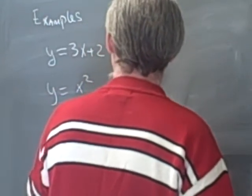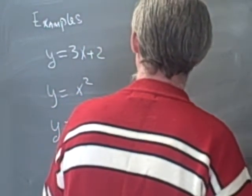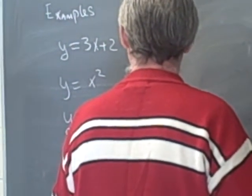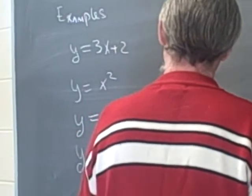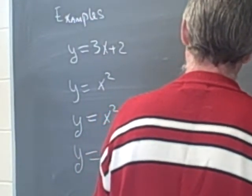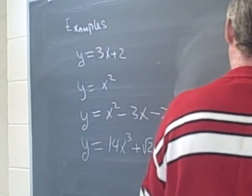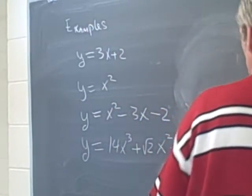Or we could look at y equals x squared minus 3x minus 2, that's a polynomial. We can look at y is equal to 14x cubed plus the square root of 2 times x squared plus 5x plus pi, that's a polynomial.